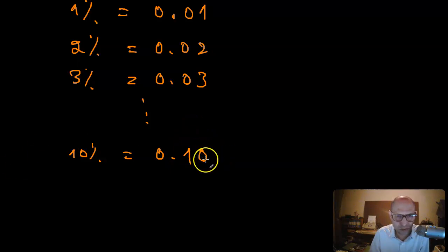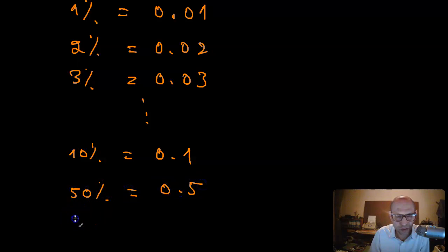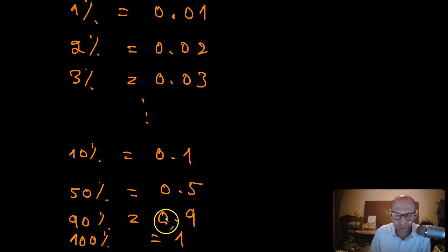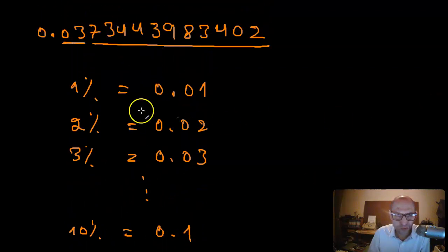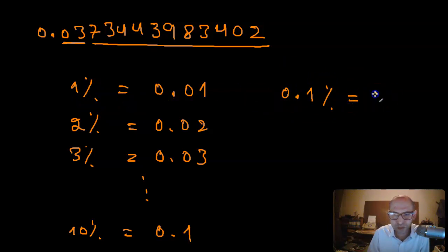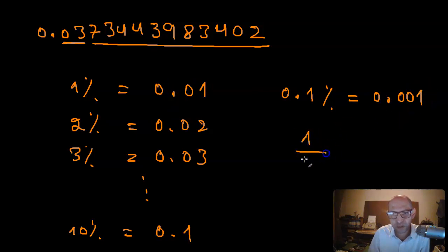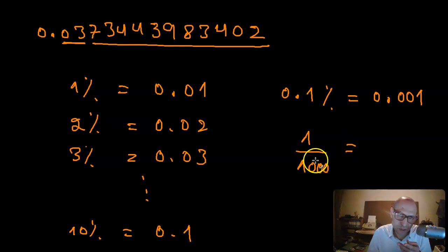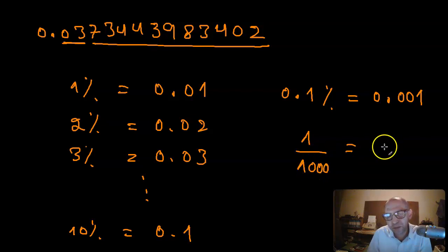To continue: 50% is 0.5, 90% is 0.9, and 100% is 1. You could also have 0.1%, which would be 0.001. To express a number in percentage form, the denominator must be 100 — meaning 'per cent' or 'per hundred.'